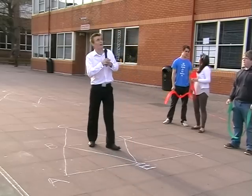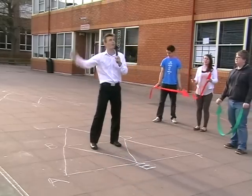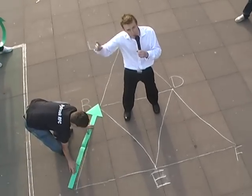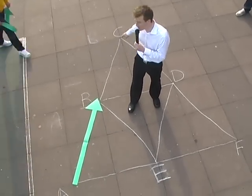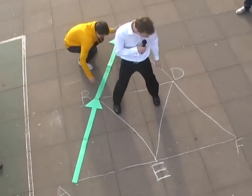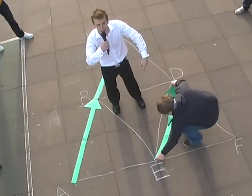In this triangle we can have the vector from A to B, here. But the same vector can also describe B to C, here. It can also describe E to D, here.